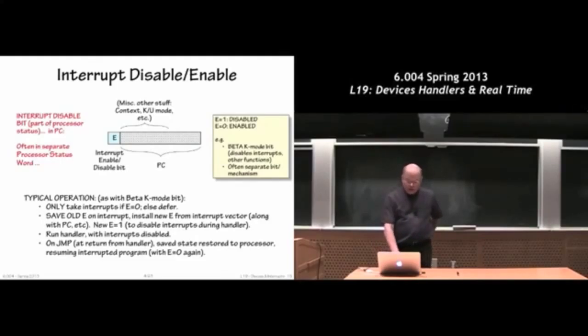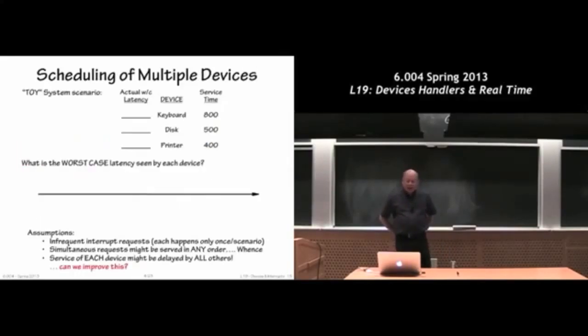So we do have this notion now of an interrupt enable disable bit, which is in our case kernel mode bit. And we've already talked about the interrupt process. And what we want to be a little concerned about is how to choose what to do when we finally take the interrupt. And I want to sort of talk about that next.